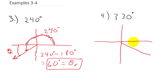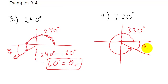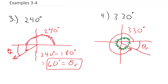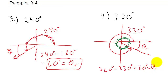Now, 330 degrees is in the fourth quadrant. Our reference angle is measured off the x-axis. To find it, we go all the way around to 360 and subtract 330: 360 minus 330 equals 30 degrees. That is our reference angle.